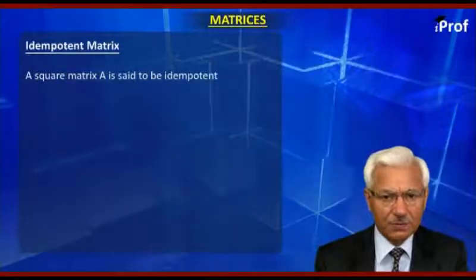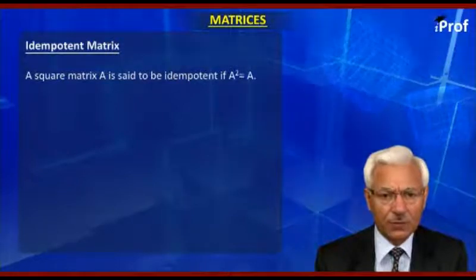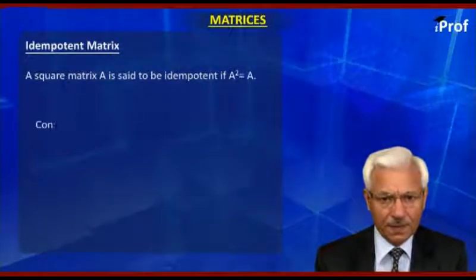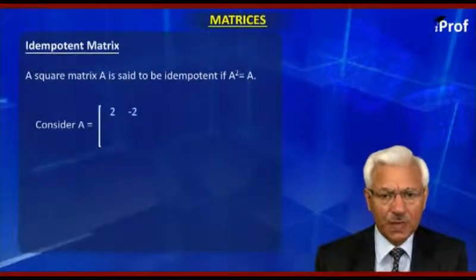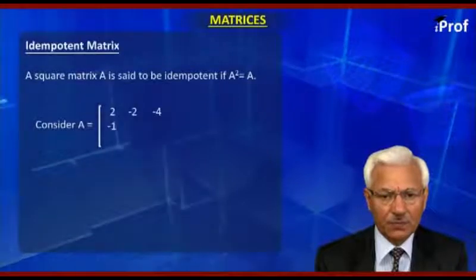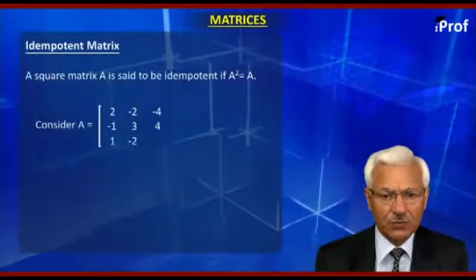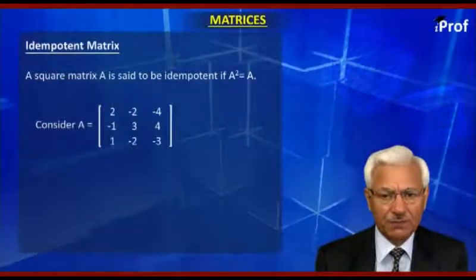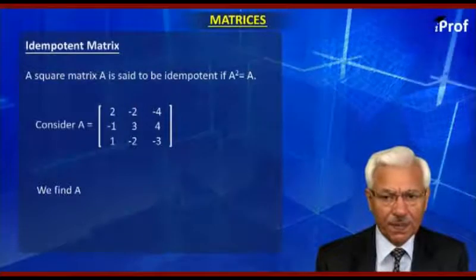Idempotent matrix: A square matrix A is called idempotent if A squared is equal to A. Consider A equal to [2, -2, -4; -1, 3, 4; 1, -2, -3]. We find that A squared, that is the product of A and A.